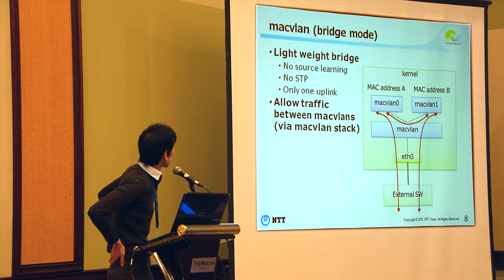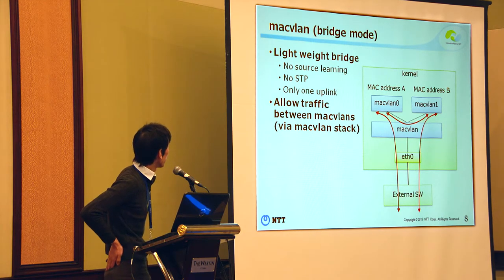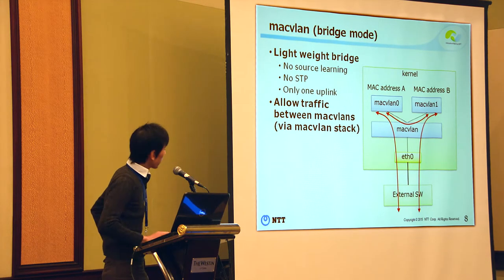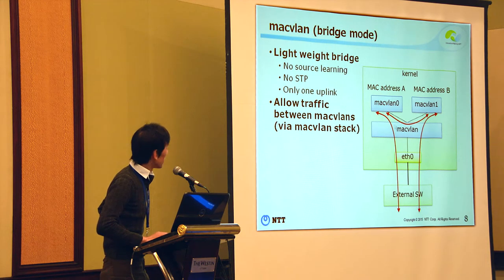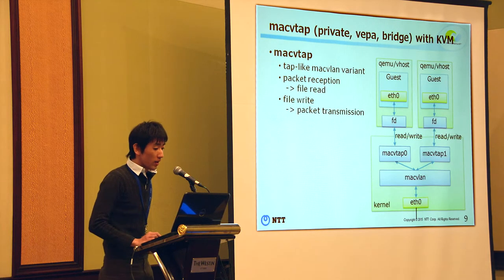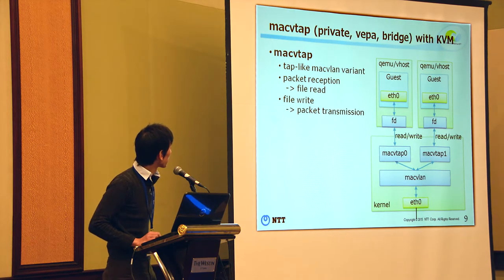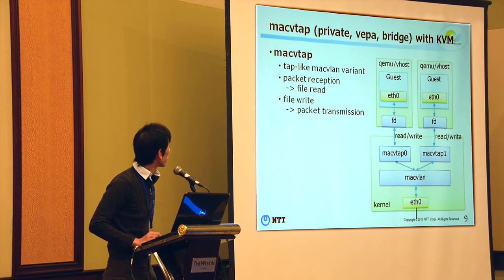MACVLAN bridge mode is a lightweight bridge. It has no spanning tree, no STP, and only one uplink. It allows traffic between MACVLANs. In the virtualization environment, we use MACVTAP instead of MACVLAN. MACVTAP is a tap-like MACVLAN variant. It converts packet reception to file read, and file write to packet transmission.